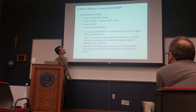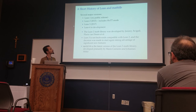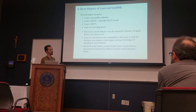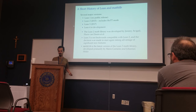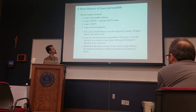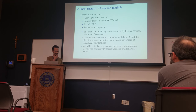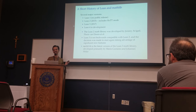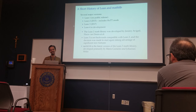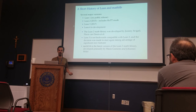A short history of Lean and MathLib. Lean has gone through several major versions. Lean 4 is in development by Leo and Sebastian Ullrich. The Lean 2 math library was developed by Jeremy Avigad and Floris van Doorn and some others. The Lean 2 math library was the origin of the MathLib library, but Lean 3 was not backwards compatible with Lean 2.